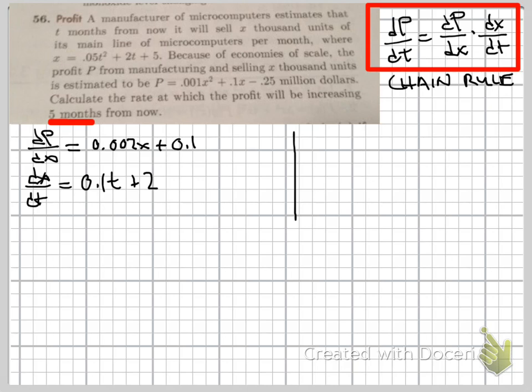The thing that we need to figure out though is specifically when t equals five, because this is all in terms of time in months. So five months from now, t should have a value of five.